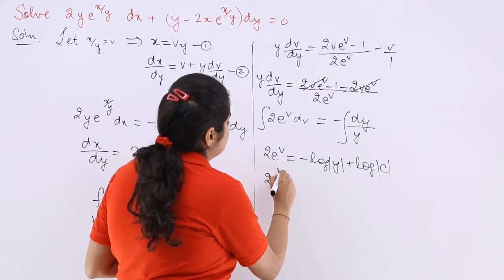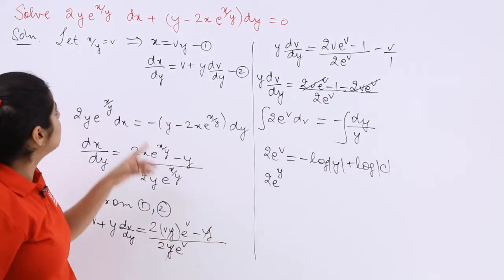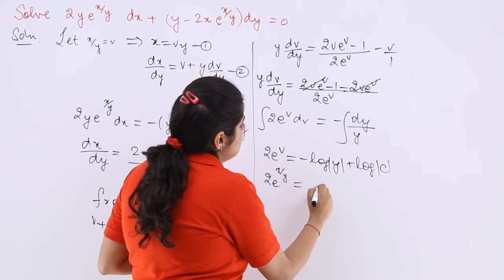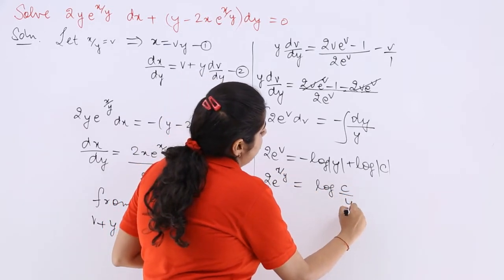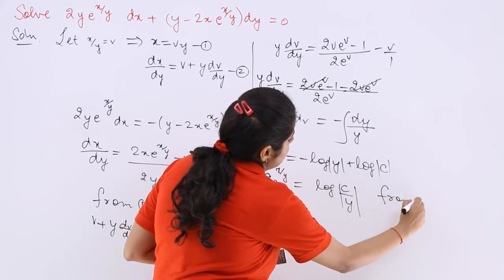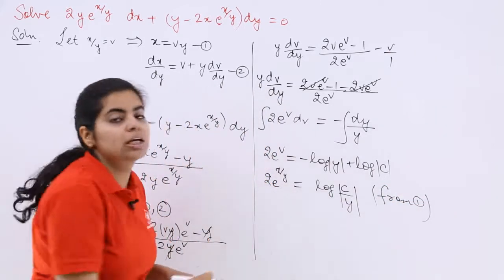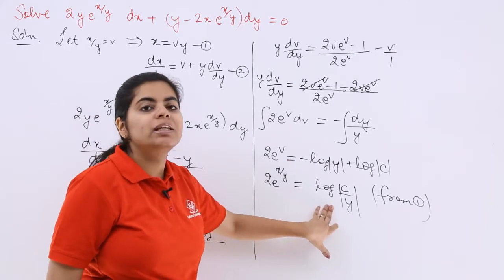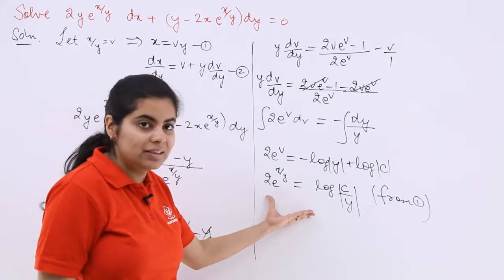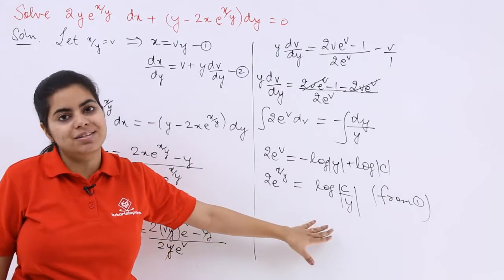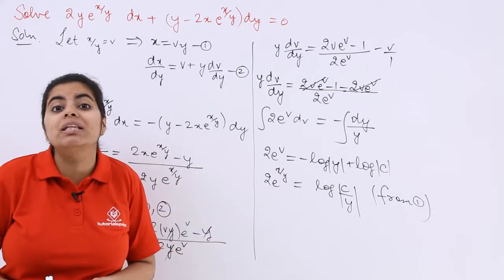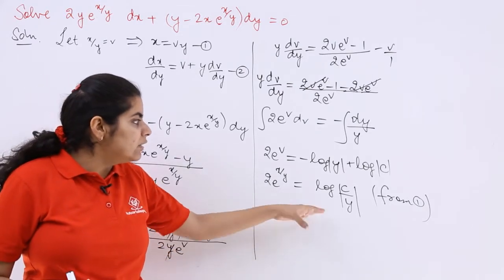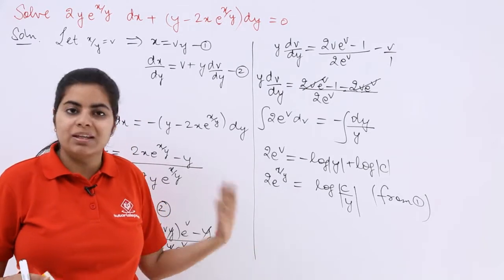So it is 2·e raised to the power and what is v? v is x upon y so it is x upon y is equal to log(c/y) and that should be from which equation? We turn this from equation number 1. Now see this is in log you can keep it in the form of e raised to the power so as to simplify the things up or you can remain the answer as it is that is up to you and that remains the answer for this question. Again I am telling you can even do what? You can even turn it into exponential sign. That is up to you.